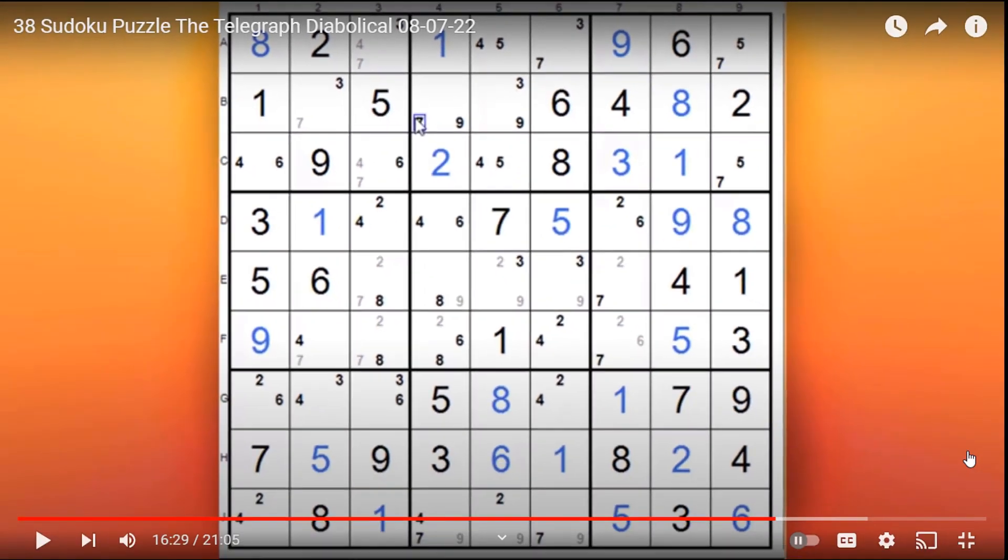It's where you have three possibles spread between three different cells, two per cell. So we have a three-nine, a three-seven, and down here we have a seven-nine. The three possibles are three, seven, and nine, and this becomes known as the pivot.